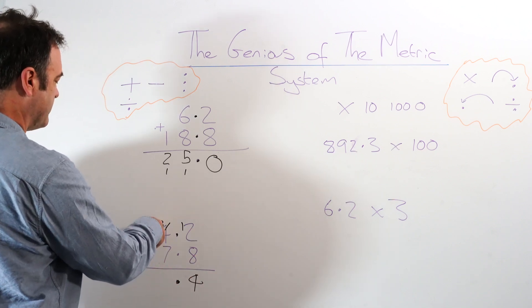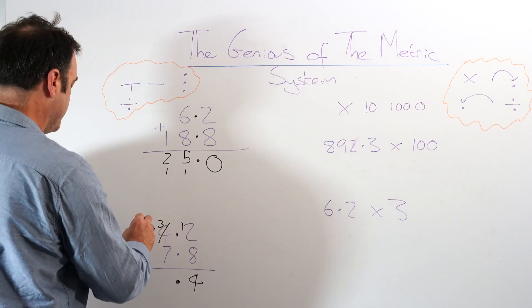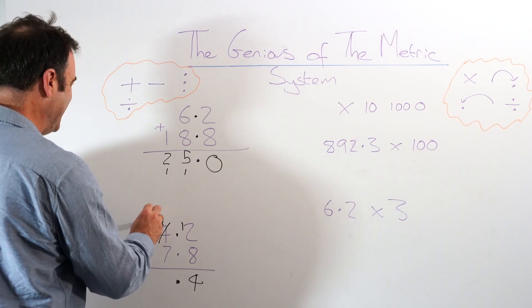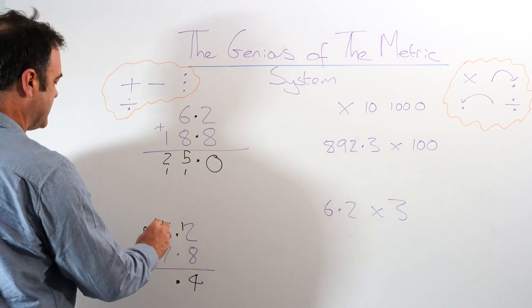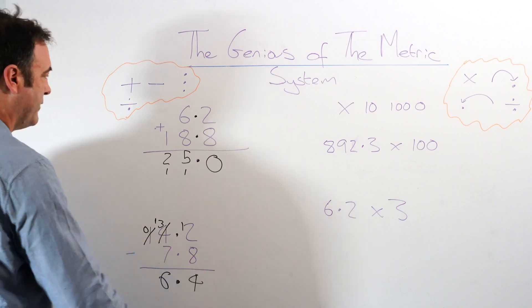We've got the same problem here though. This number is now smaller than this number, or it was before anyway. So we borrow from here, that becomes 0 now. We put it next to that number. That becomes 13. So this in fact becomes 6, and there's nothing to do there. 6.4.